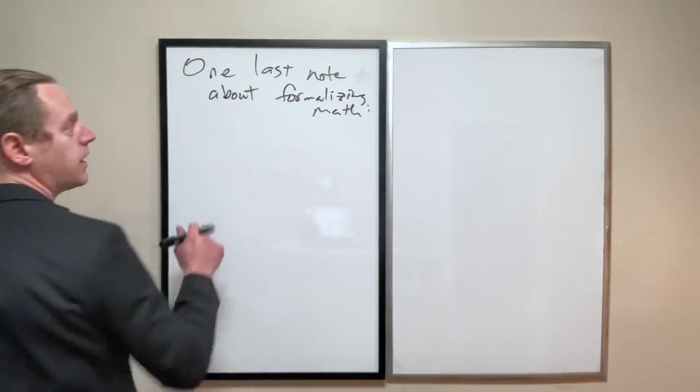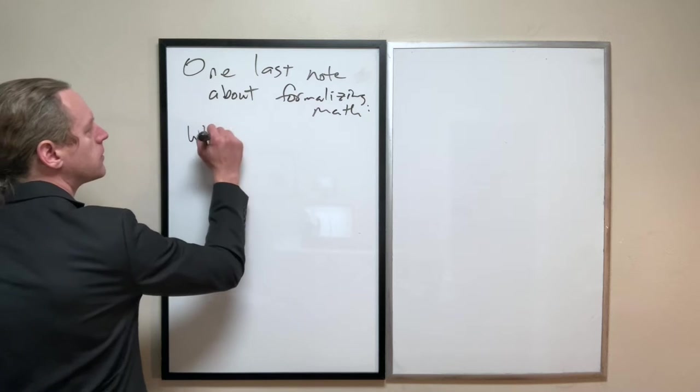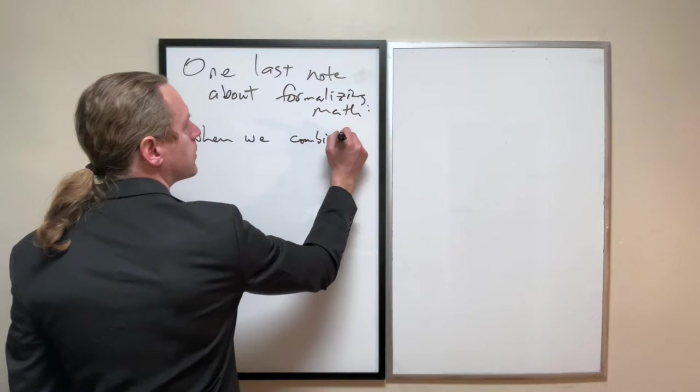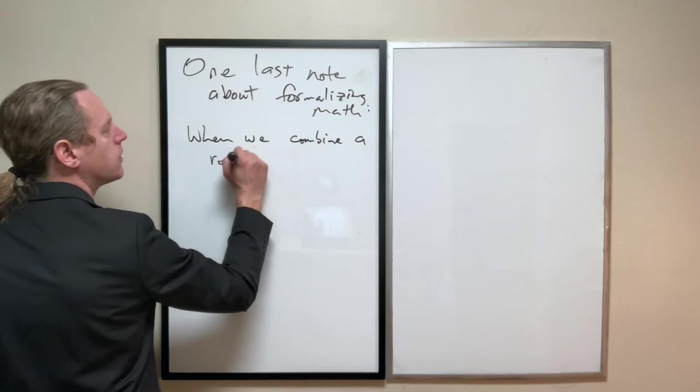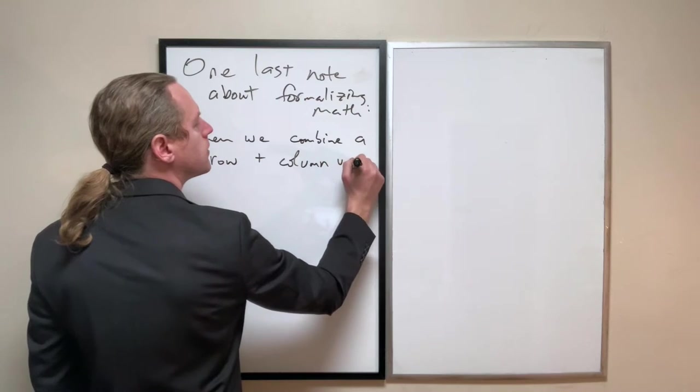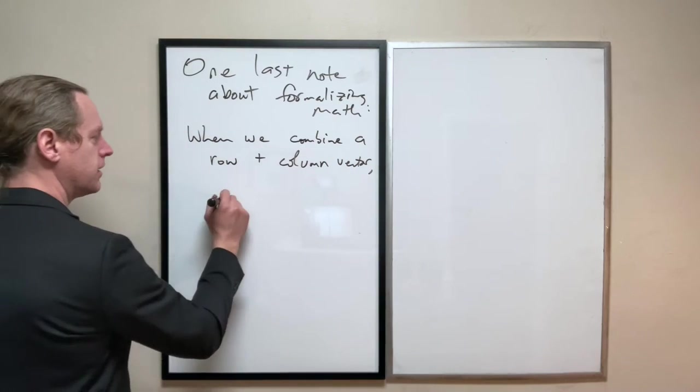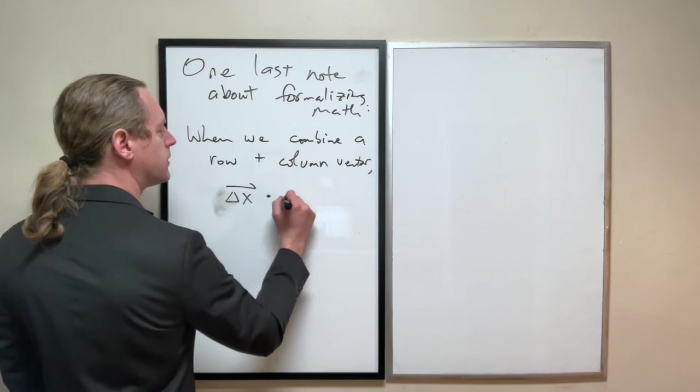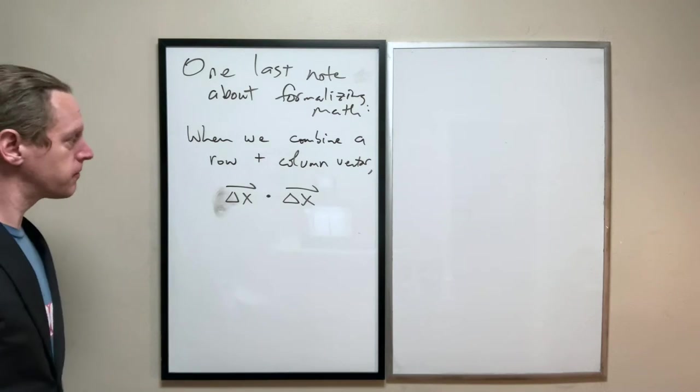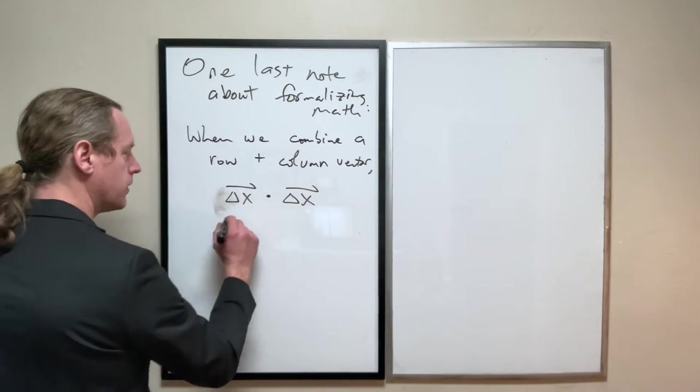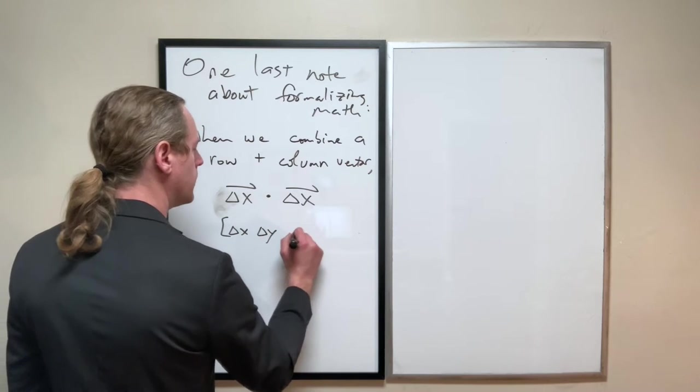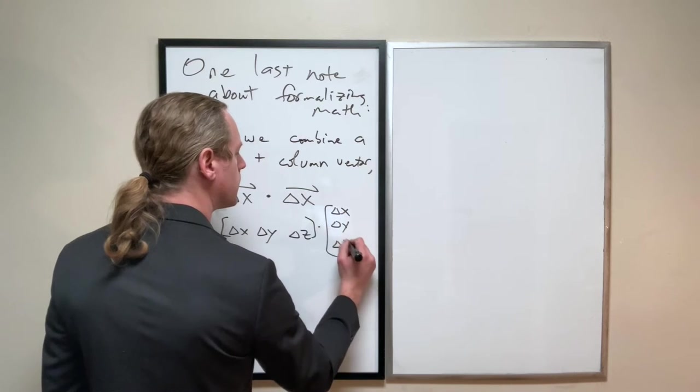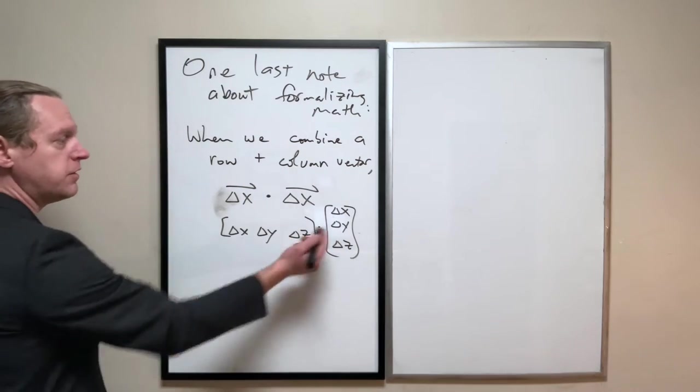So when we combine a row and column vector, if you think about like delta x dot delta x in normal kinematics, that's exactly what we're doing. We have delta x, delta y, delta z dotted with that same thing.